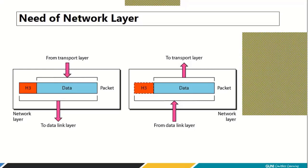The transport layer gives data to the network layer and expects to get the same data delivered. On the receiver side, data comes from the data link layer up to the network layer. The network layer checks its header, does some housekeeping based on what the sender's network layer sent, and then passes the data up to the transport layer. This is the main responsibility of the network layer as depicted in the diagram.